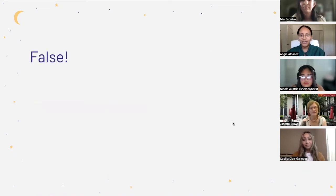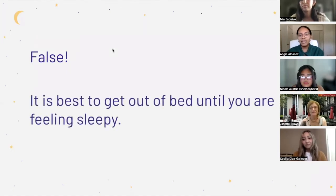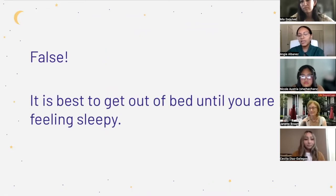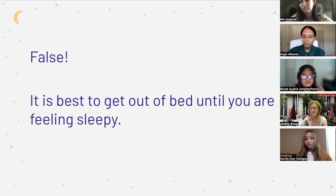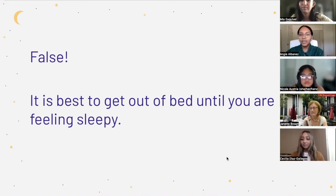The answer is false, and we were pretty split on this one. If you have trouble falling asleep within the first 20 minutes, experts recommend getting out of bed instead of tossing and turning. It's better to get up and do something relaxing in a quiet, dim setting and then try to go back to bed. That wraps up our true or false section — thank you so much for playing.